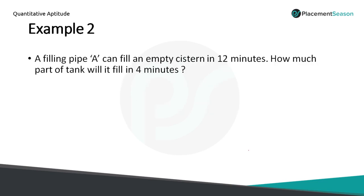Another example: A filling pipe can fill an empty cistern in 12 minutes. How much part of the tank will it fill in 4 minutes? A fills 1/12 of the tank per minute. So in 4 minutes, it will fill 4/12, which equals 1/3. Therefore, 1/3 of the tank will be filled in 4 minutes.